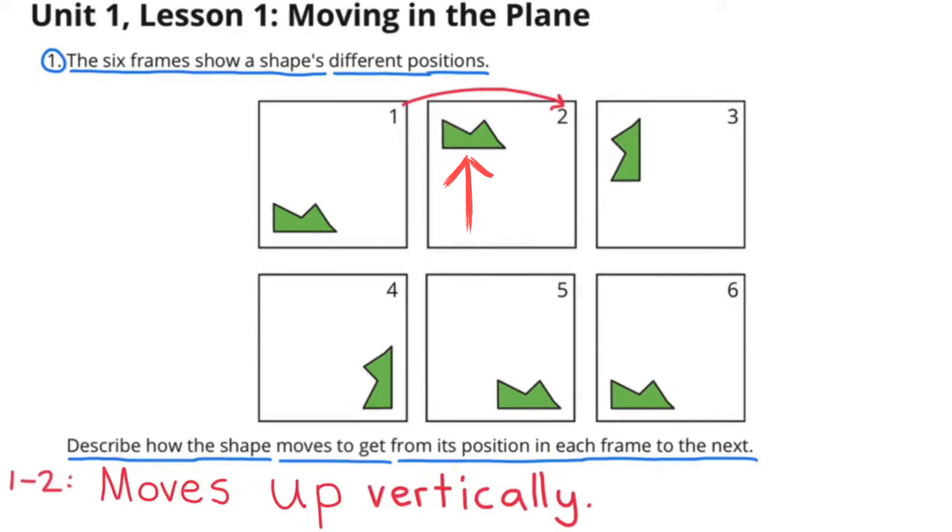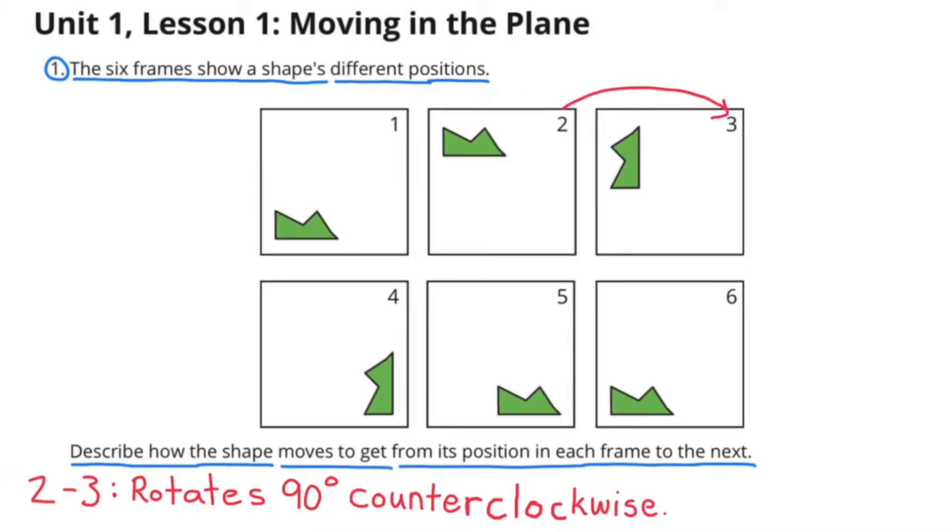From frame 1 to frame 2, the shape moves up vertically. From frame 2 to frame 3, the shape rotates 90 degrees counterclockwise.